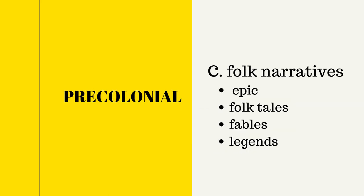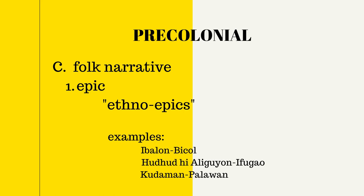For folk narratives, we have epics, folk tales, fables, and legends. One common element is magic — they explain how certain things or places were formed, why a certain animal behaved differently, or how a certain place originated. We do not have a national epic like in other countries, because during pre-colonial times, the early people did not have a sense of oneness as a whole nation but considered their own community or region as a nation. That is why we have several epics from different regions.